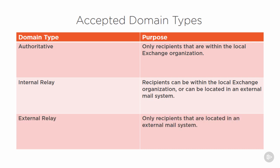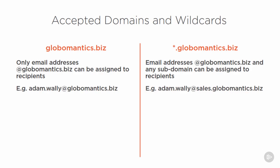The other type is External Relay Domains. These are domains for which Exchange has no local recipients, but can relay the messages to another mail system to handle. When you configure an accepted domain, it's possible to configure just the domain name itself, or you can use a wildcard.